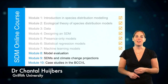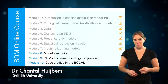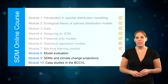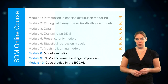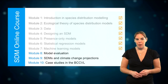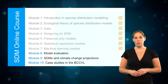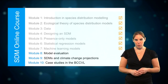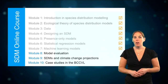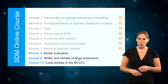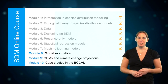Welcome back to this online open course about species distribution modeling. Now we have looked at the different algorithms that you can use to predict species distributions, it's important to understand how to interpret the output of a model. A vital step in modeling is assessing the accuracy of the model prediction, commonly called validation or evaluation. In this module I will explain how to do this.